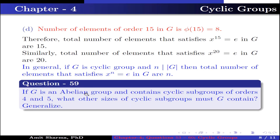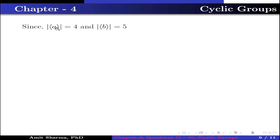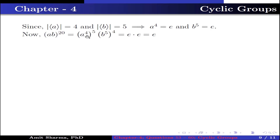Question number 59. If G is an abelian group and contains cyclic subgroups of order 4 and 5, what other sizes of cyclic subgroups must G contain? Given G is an abelian group containing cyclic subgroups of order 4 and 5, say the subgroup generated by A and the subgroup generated by B. Since the subgroup generated by A has order 4 and the subgroup generated by B has order 5, this implies A⁴ = identity and B⁵ = identity. Now (AB)²⁰ = (A⁴)⁵·(B⁵)⁴ = identity.